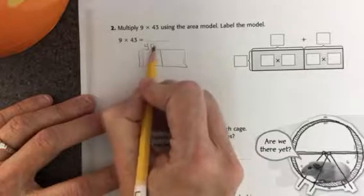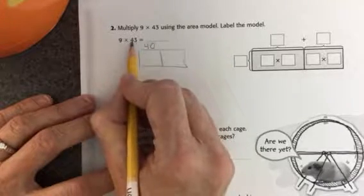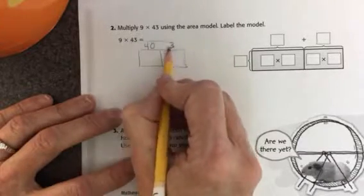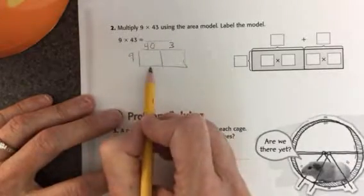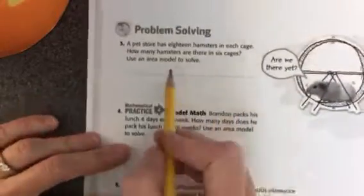The value of the 4 is 40, and the value of 3 is 3. And then I'll write the 9 down here. Okay, and then I'll go ahead and work it out. You'll do the same thing on these other problems.